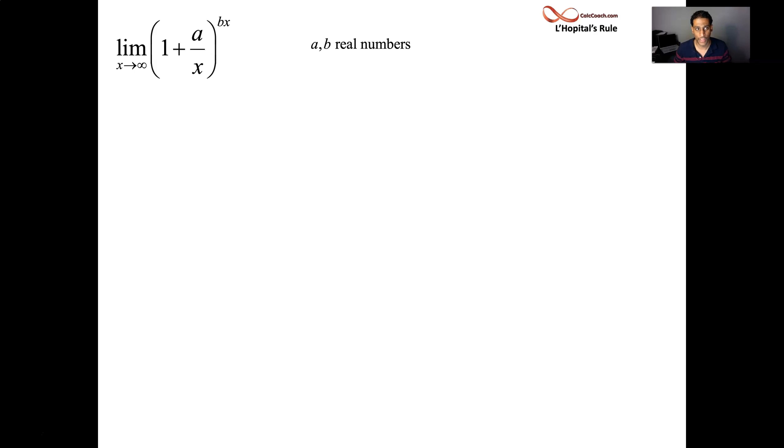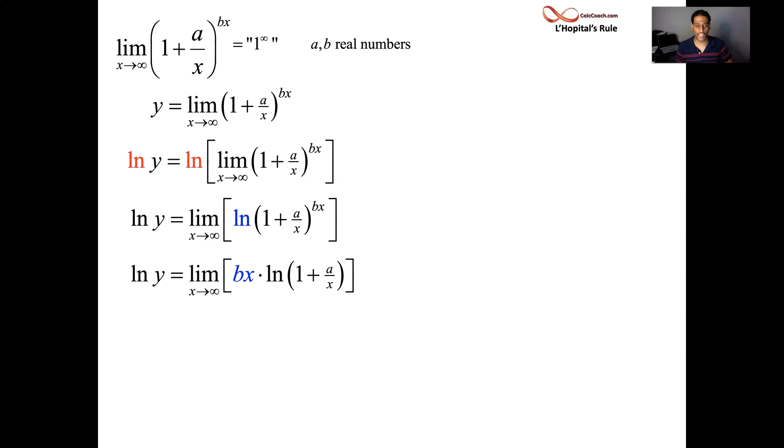X goes to infinity. A over X goes to zero. The inside is going to one. It's raised to the B times X, and X is going to infinity. So, it is of the format one to the infinity. Let Y equal the limit. Take the natural log of both sides. Bring the natural log inside. Take the exponent down. You now have infinity times zero.